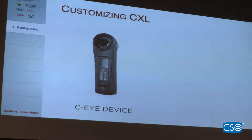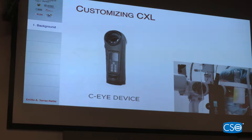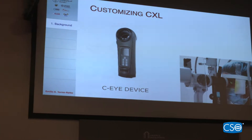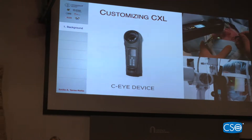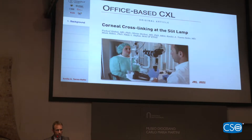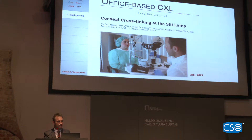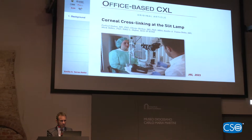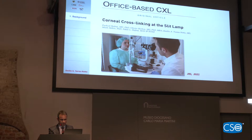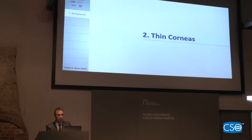I'm showing recent advances where cross-linking can be customized on an individual, case-by-case basis using the CI device. This can be done whether in the lying-down position or at the slit lamp. Here are images of both setups — the slit lamp setup is very easy and straightforward; you simply place the device over the slit lamp.